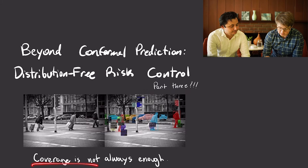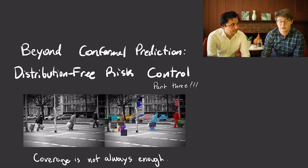Hi everyone, welcome back. Welcome to part three of our gentle introduction to conformal prediction and distribution-free uncertainty quantification. I'm Steven, and I'm Anastasios. In this part of the tutorial, we're going to tell you about risk control beyond conformal prediction — how you can do things like confidence sets and other notions of statistical error for a large number of learning tasks.